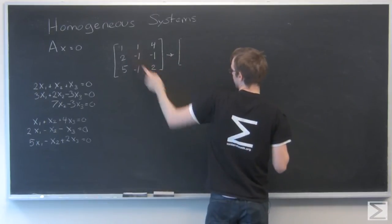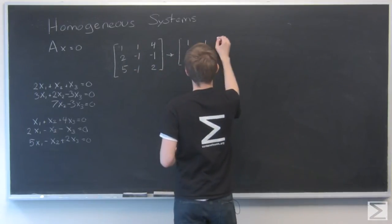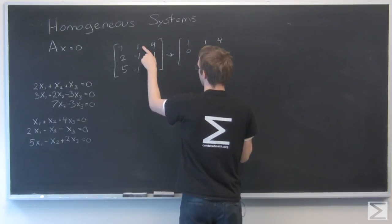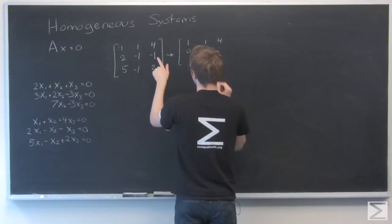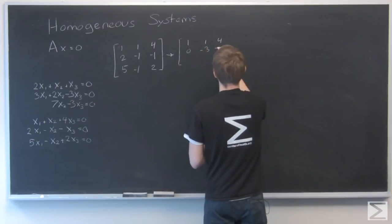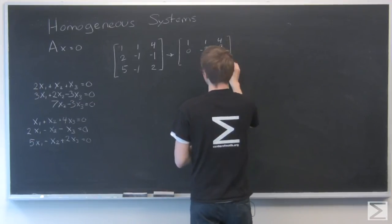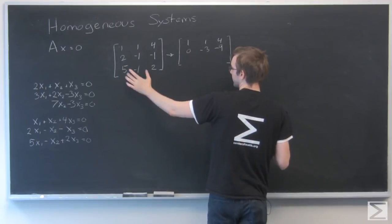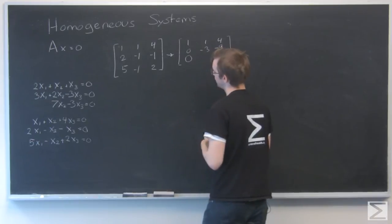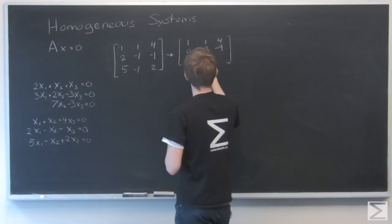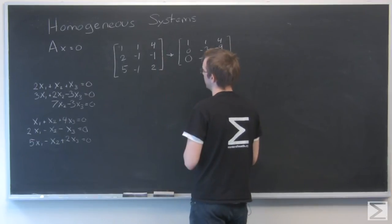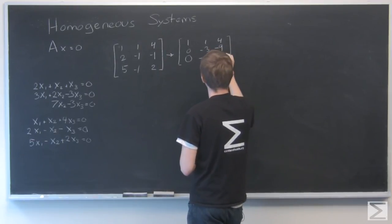I'm going to go row 2 minus 2 times row 1. Minus 1 minus 2 times 1, that's minus 3. Minus 1 minus 2 times 4, that's minus 1 minus 8, minus 9. I'm going to go this row minus 5 times this row, so that'll be 0. Minus 1, minus 5 times 1, that's minus 6. And 2, minus 5 times 4, that's 2 minus 20, that is minus 18.